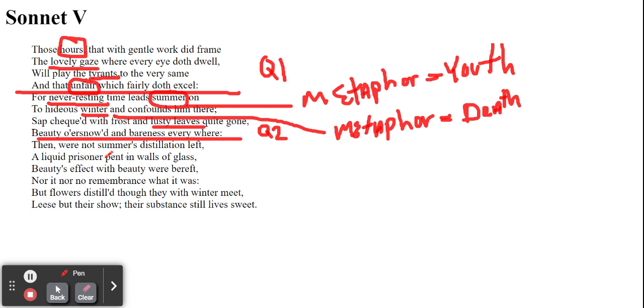But there's a solution in Q3. And that's basically this. Here we have this distillation process. That the flowers of summer that are so beautiful, the essence of that flower will remain in penting walls of glass. And that distillation, here we have the process of extracting perfumes from the petals of a flower.